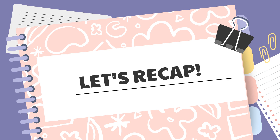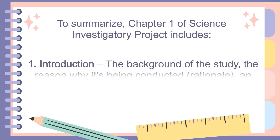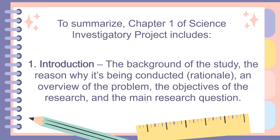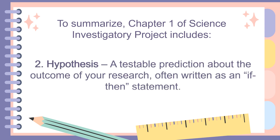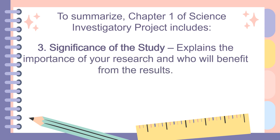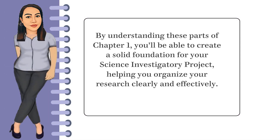Let's recap. Chapter 1 of a Science Investigatory Project includes: 1. Introduction — covering the background of the study, the rationale, an overview of the problem, the objectives, and the main research question. 2. The hypothesis — a testable prediction about the outcome of your research, often written as an if-then statement. 3. Significance of the study — explains the importance of your research and who will benefit. 4. Scope and limitations — defines what your study will cover and any challenges or factors that could limit the study's results. By understanding these parts, you'll create a solid foundation for your science investigatory project.